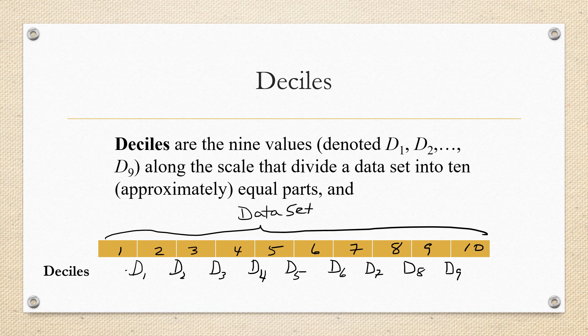If you can imagine that this is a data set and these are the 10 parts of the data set, then the deciles are D1, D2, D3, D4, D5, D6, D7, D8, and D9. So it takes nine of them to divide the data into 10 chunks.